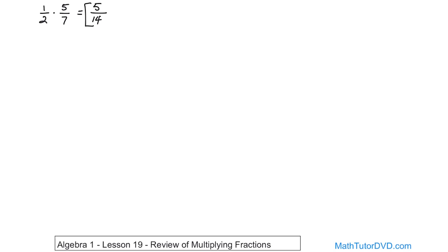All right, what if you had 3 fourths times 1 half? Well, you multiply the tops. 3 times 1 is 3, so that's going to be on the top, and then you multiply the bottom. 4 times 2 is 8, and you ask yourself, is that simplified? And it is, so you're done. It's very simple.